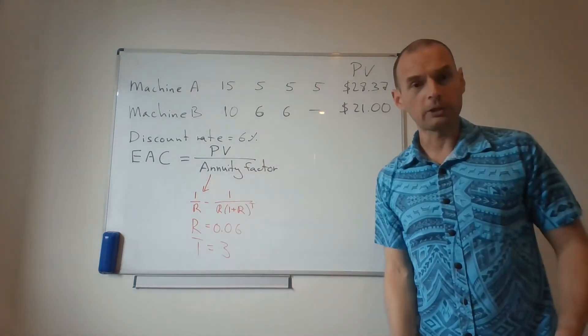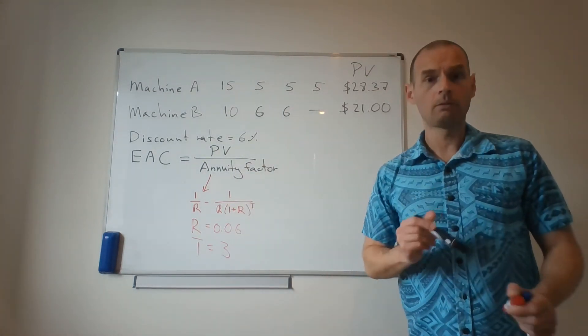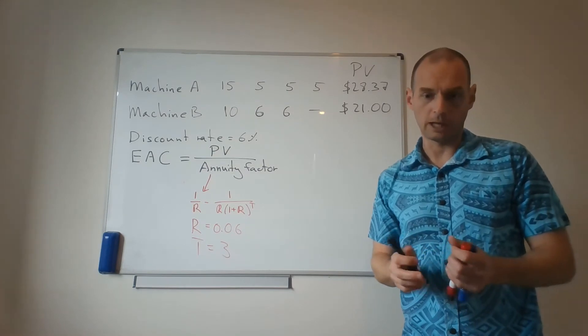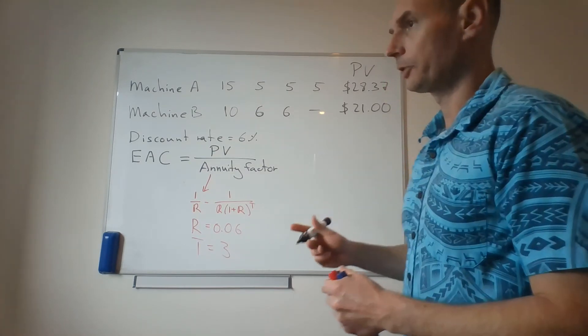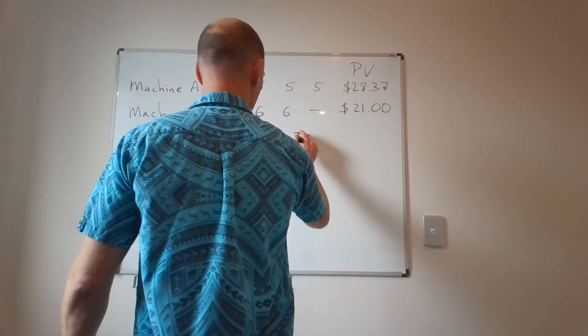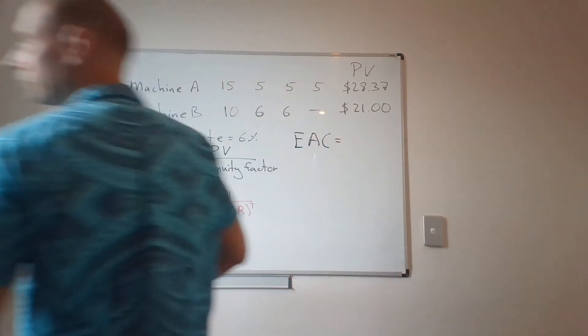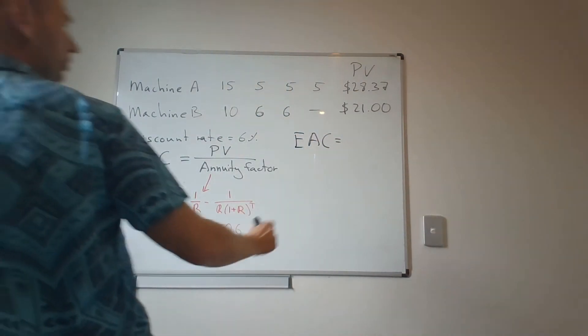If you go through this computation, and we will be going through this computation in class, what you will get is this. For Machine A, the equivalent annual cost is 10.61.